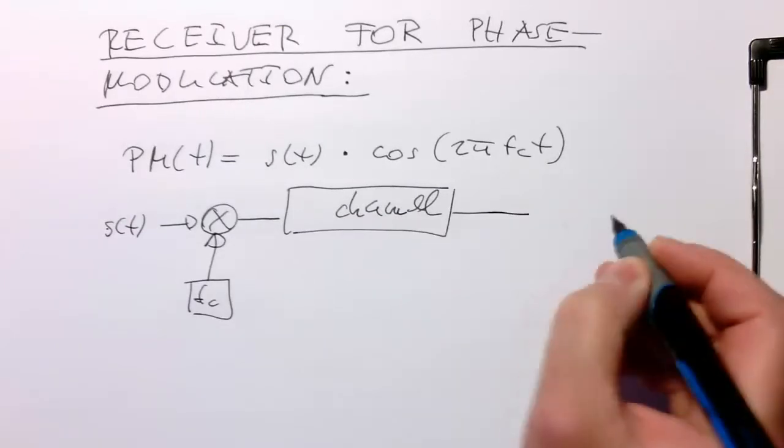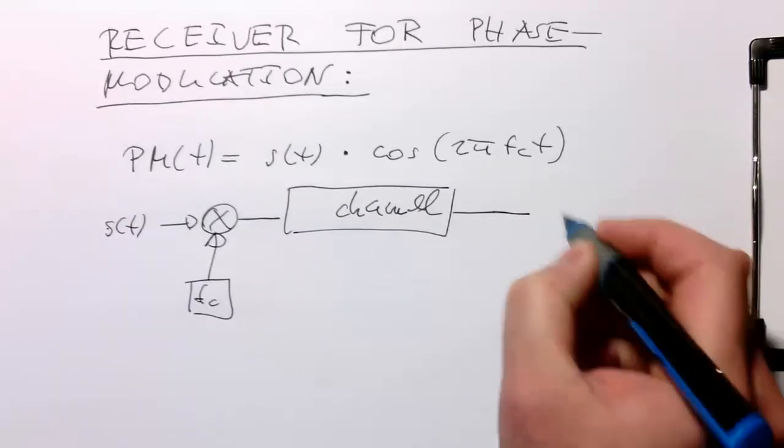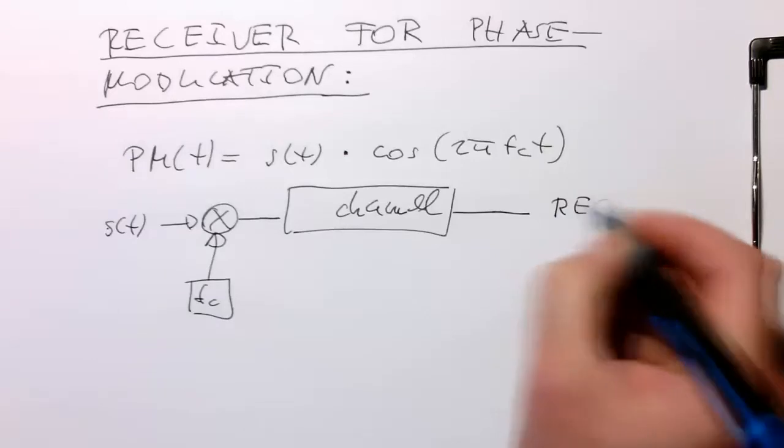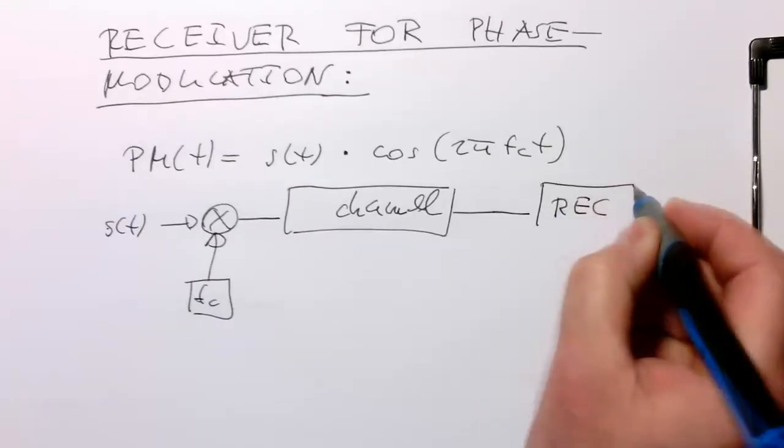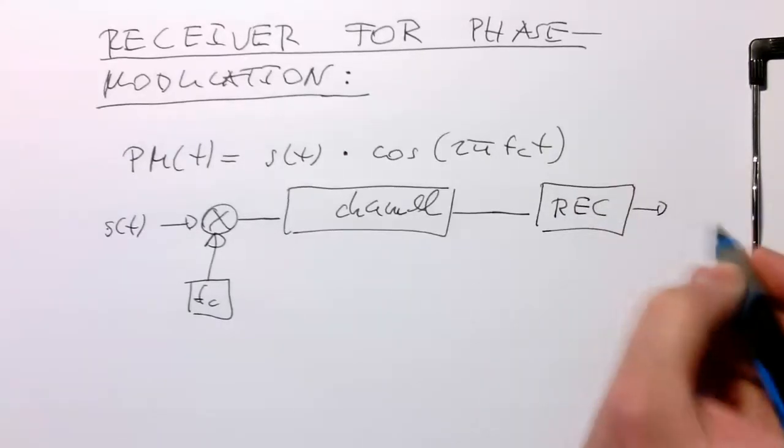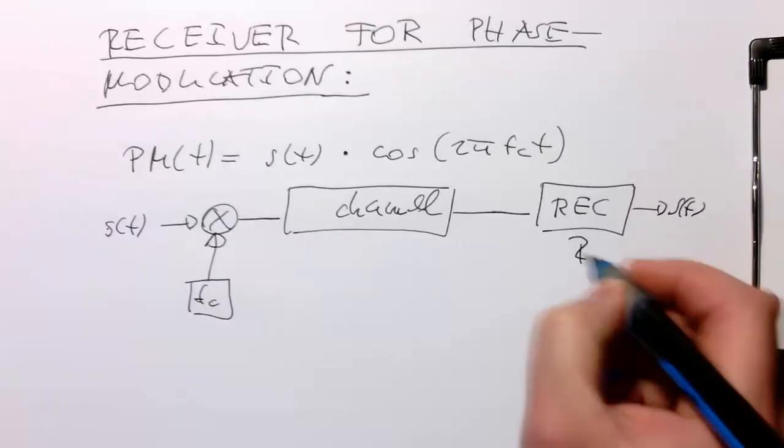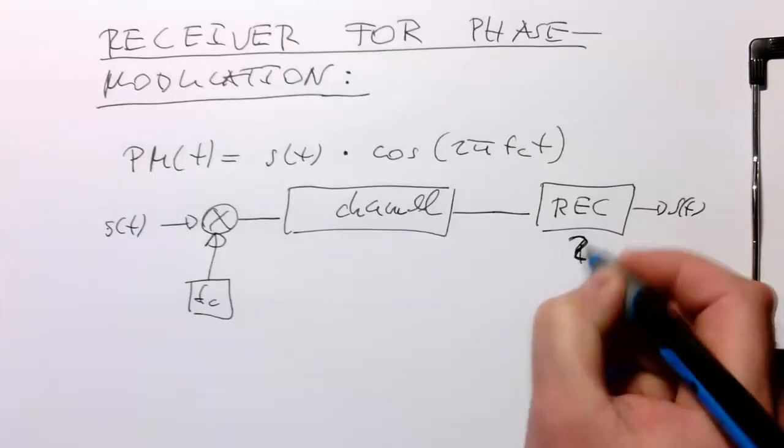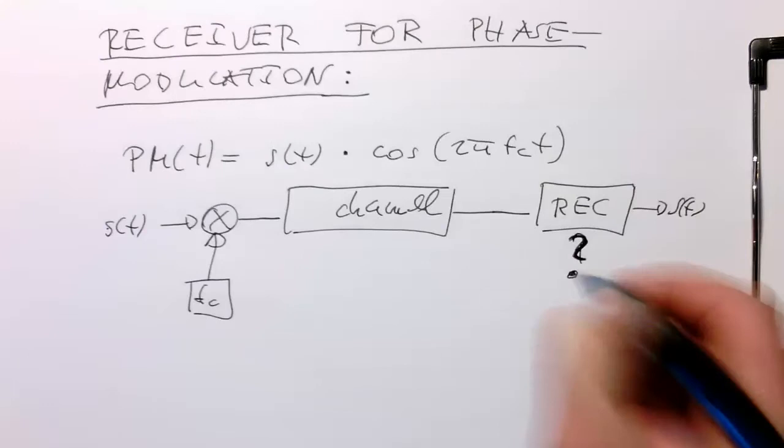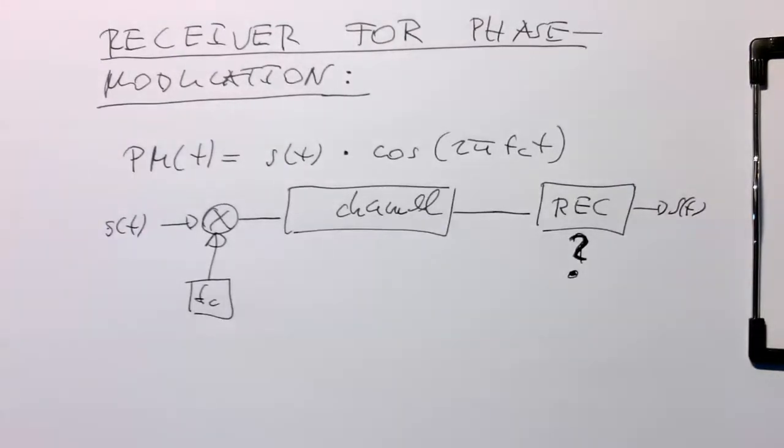What do we do on the receiver? If this is our receiver and we would like to have our s(t) back, how do we do that? The solution is very simple.